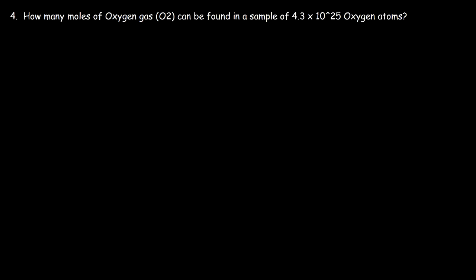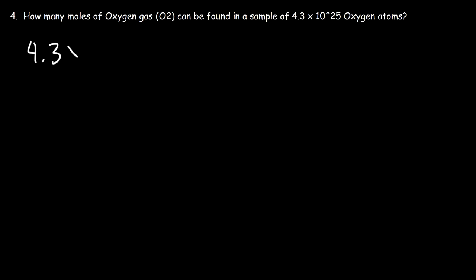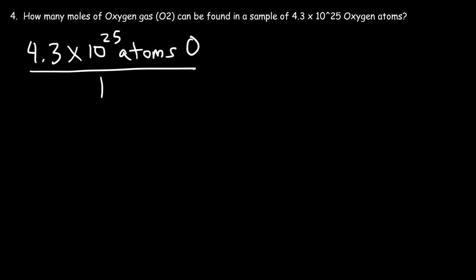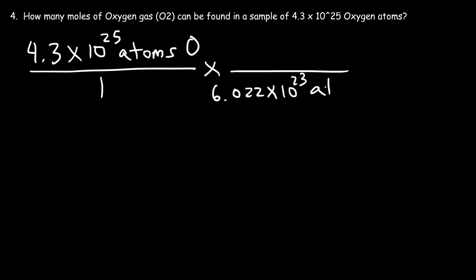Number 4: how many moles of oxygen gas can be found in a sample of 4.3 times 10 to the 25 oxygen atoms? We're given atoms of oxygen and need to convert to moles of oxygen gas, which is a molecule — so we need to go from O to O₂, which involves an extra step. Starting with 4.3 times 10 to the 25 atoms of oxygen — this is O, not O₂ yet — let's first convert to moles of oxygen using Avogadro's number.